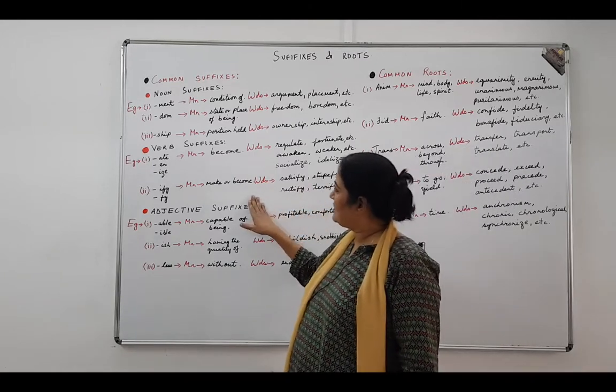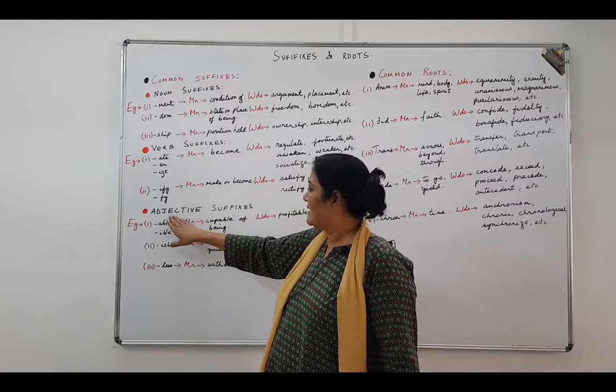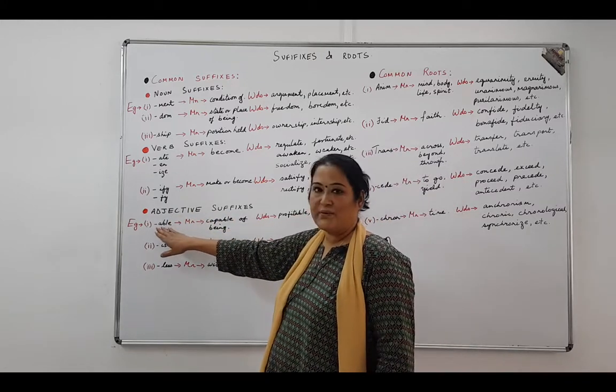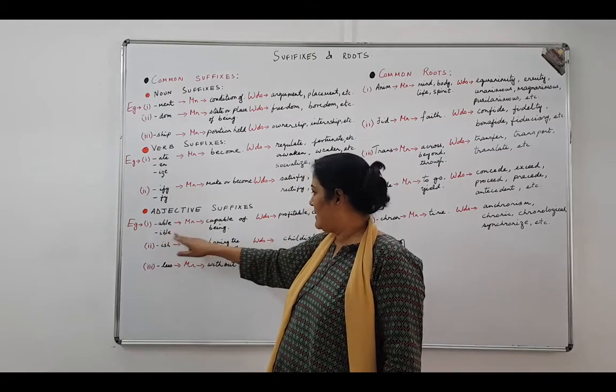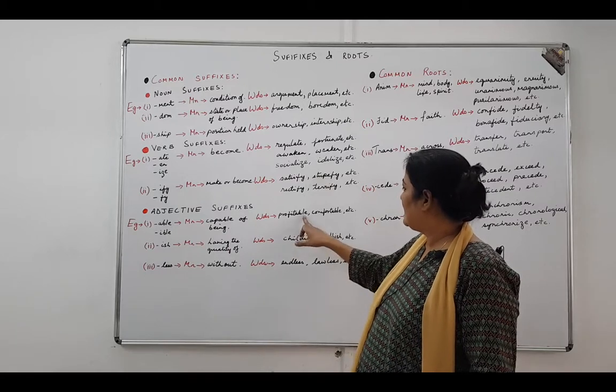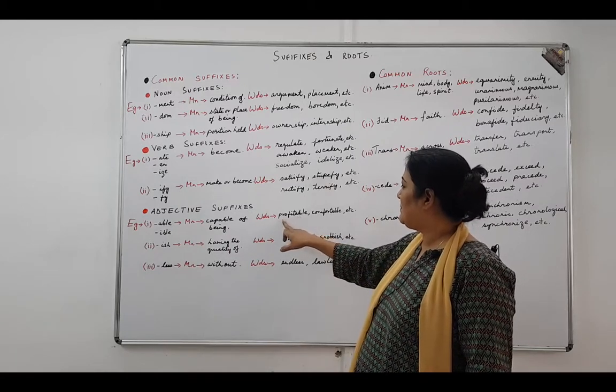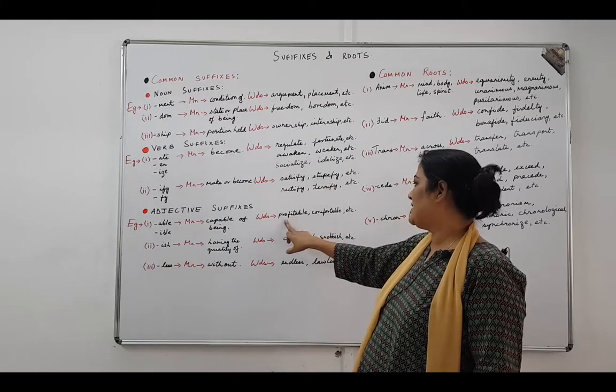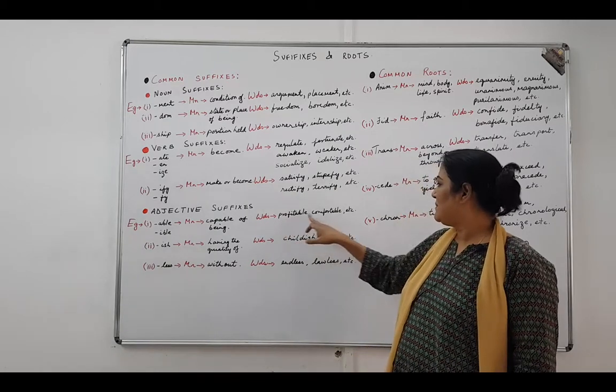Moving on after the verb suffix, we move to the adjective suffixes. The first one is a-b-l-e, i-b-l-e. So if you are having this suffix, then you are capable of possessing this quality. The words that I have given are profitable, comfortable.